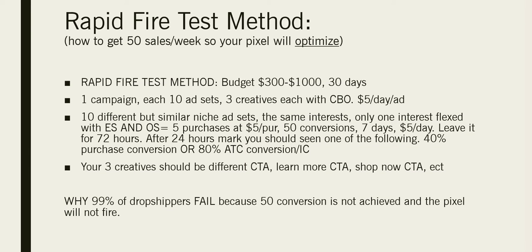This webinar is called the rapid-fire test method: how to get 50 sales per week so your pixel will optimize. This is the number one biggest mistake beginner dropshippers make — they'll get a few sales here and there but it won't be consistent. They'll get three sales one day, two the next, five the day after, and then it drops. You have to get 50 conversions per week so your pixel will optimize.